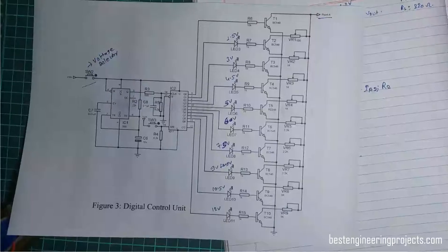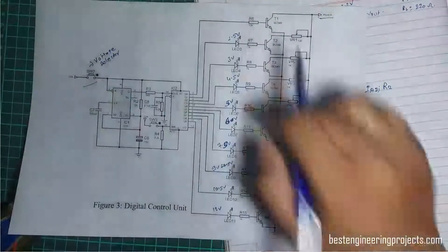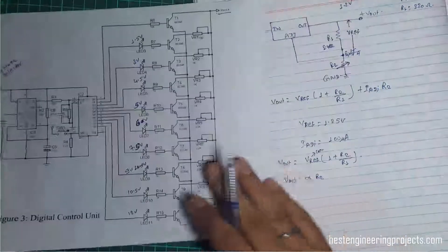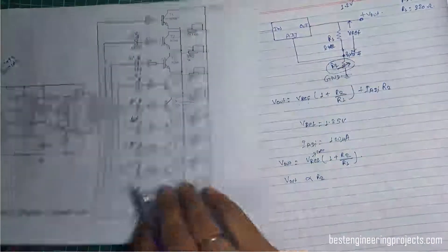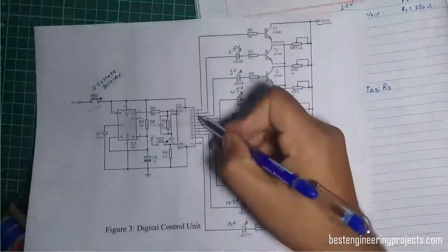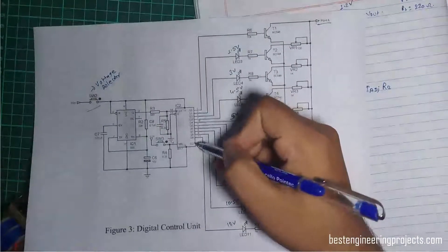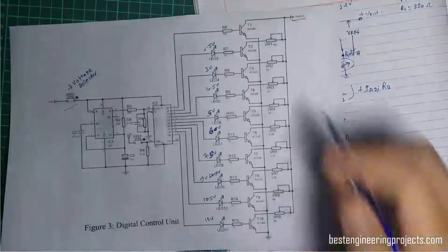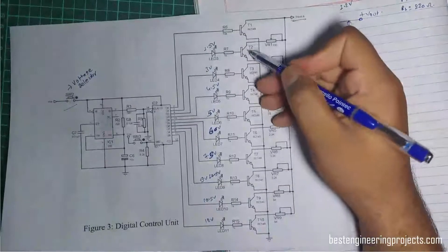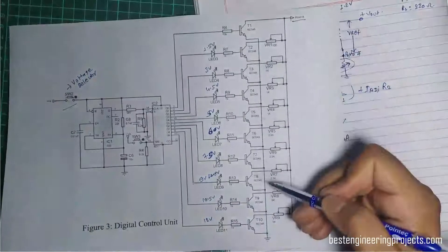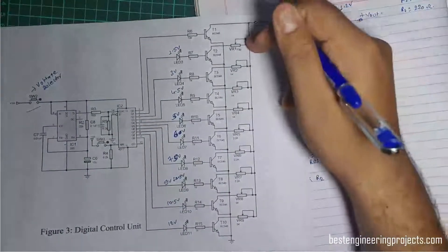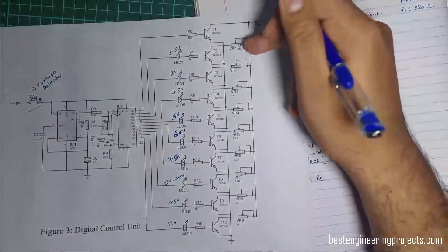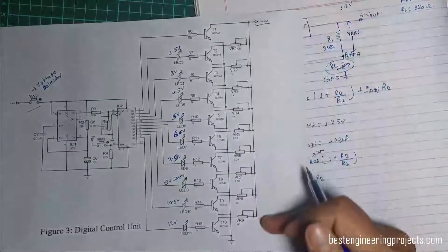With the help of this control circuit, we can select the value of R2 by switching the output of the decade counter. At any one time, only one transistor is activated, so the resistance between the reference point and ground is fixed at the value of that variable resistor.